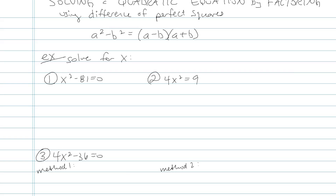If you remember difference of perfect squares, it will make your factoring problems a lot easier. Each one of these problems is based on this difference of perfect squares shortcut. If you have something squared minus something else squared, then the factored form is a minus b times a plus b — a plus sign and a minus sign. They could be in different order; you could put the plus sign first or minus sign first, it doesn't matter.